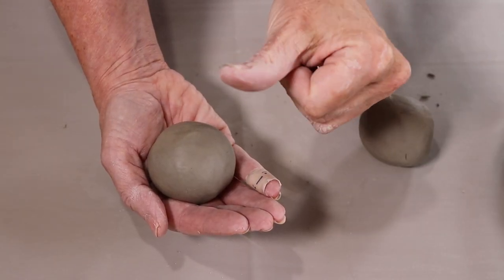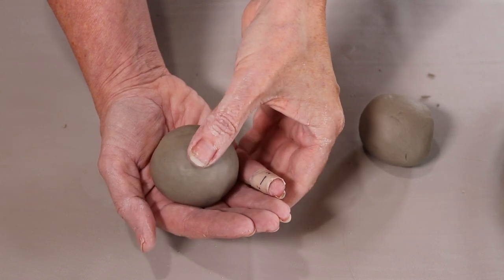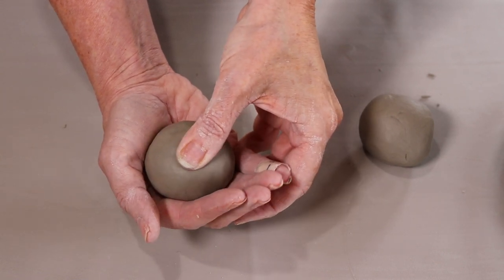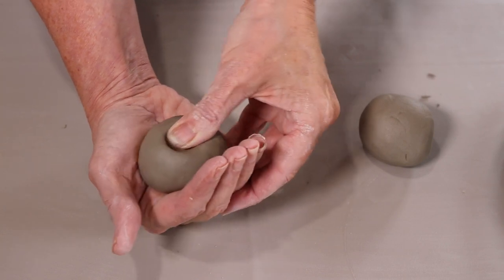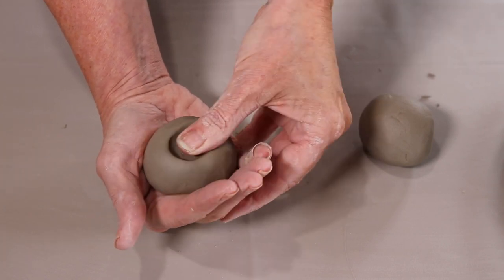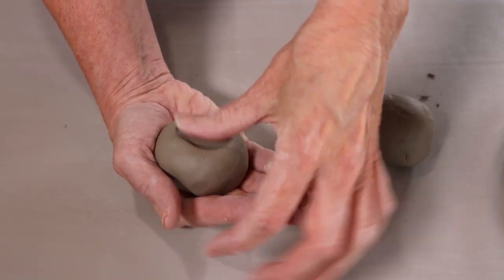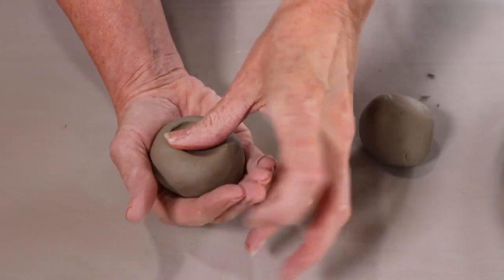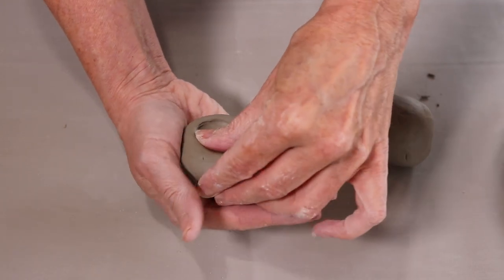Okay you need the ball of your thumb. What you need to do is just press, press down. As you're pressing down you're also cupping your hand. And I'm going to move the clay around the thumb.